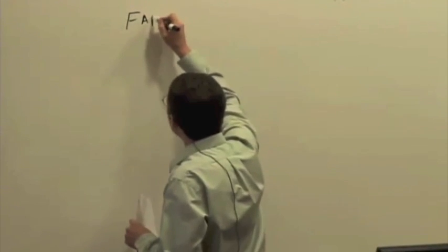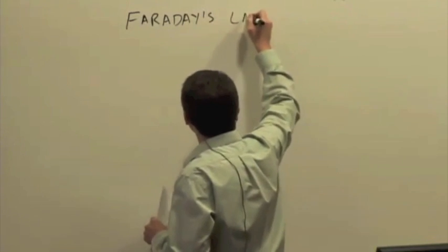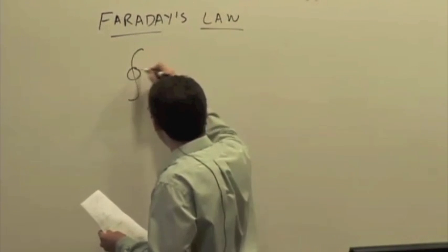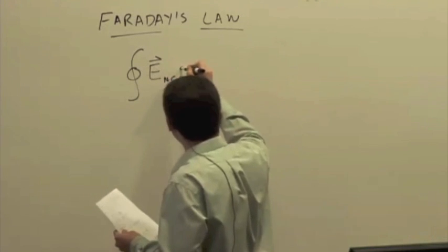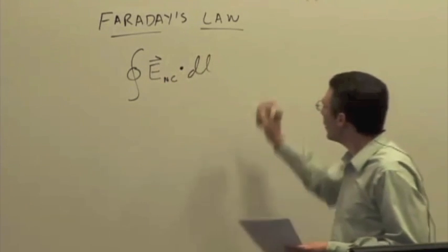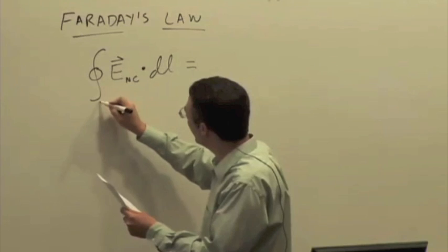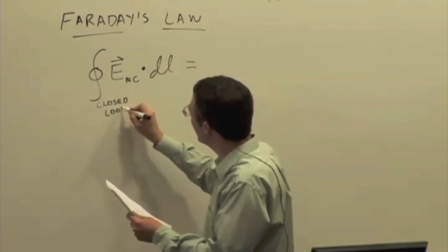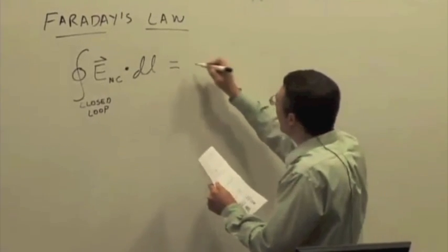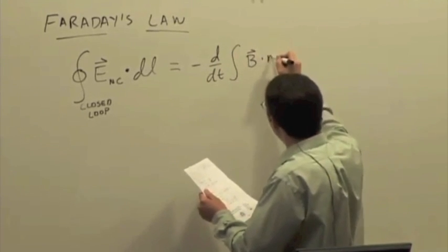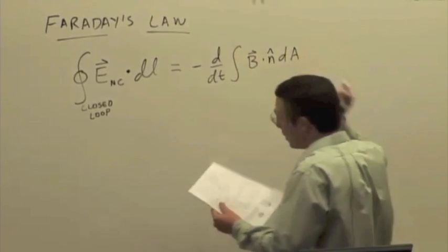Let's continue with Faraday's Law, which we introduced last time, which says that there is a non-Coulomb or curly pattern of electric field associated with a changing magnetic field. So if you have a round trip path integral of electric field over a closed loop, that is associated with a rate of change of magnetic flux through that loop. We'll do more with this today in terms of calculations.